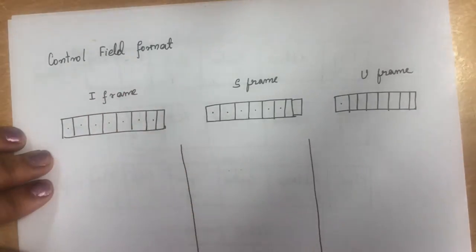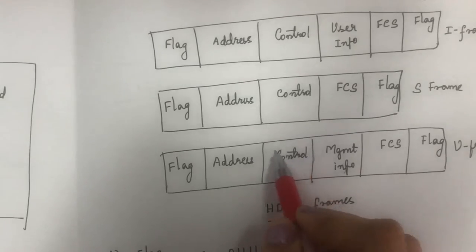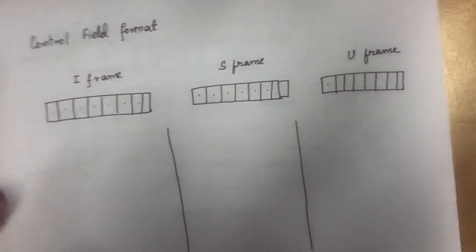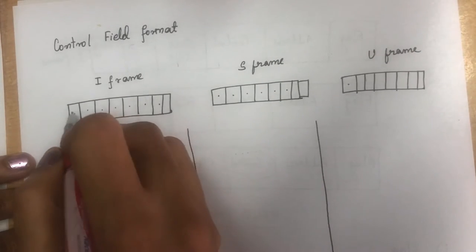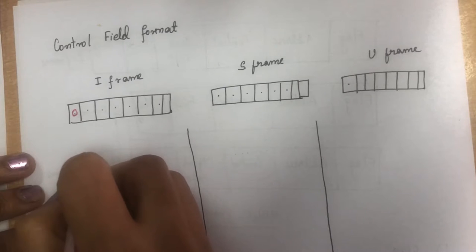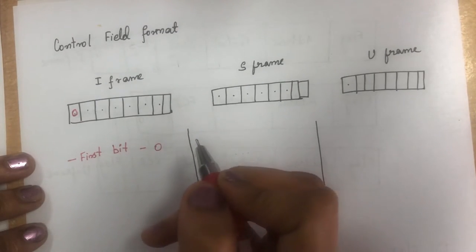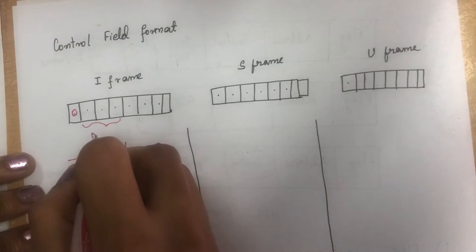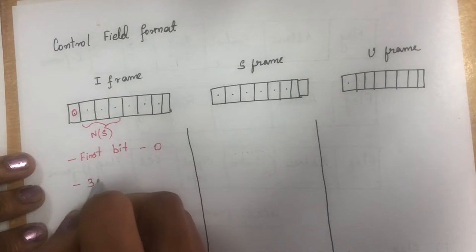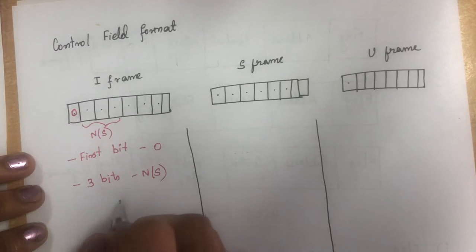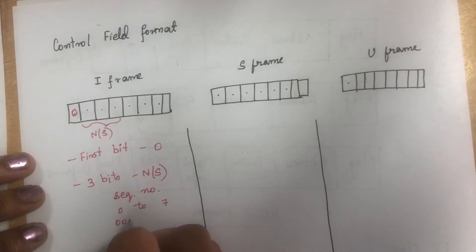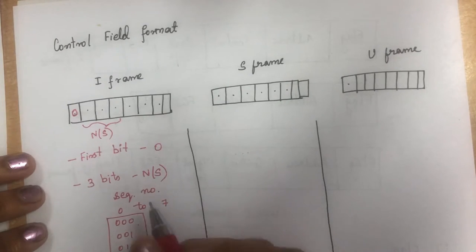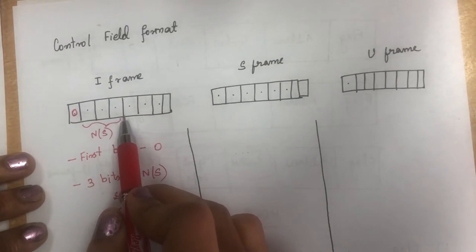Next we will see the control field format, which has a different format for I-frame, S-frame, and U-frame. In the I-frame control field: the first bit is zero; the next three bits are called N(S), which carry the sequence number of the frame from 0 to 7; and the last three bits carry N(R), which is the acknowledgement number.